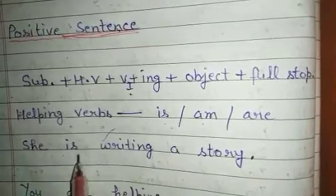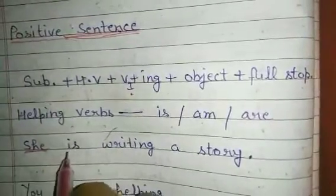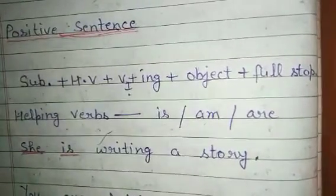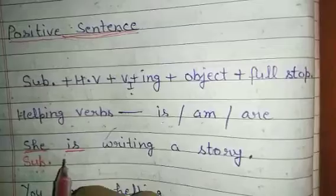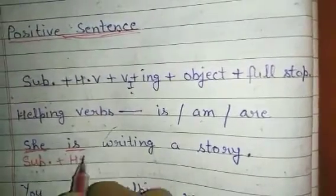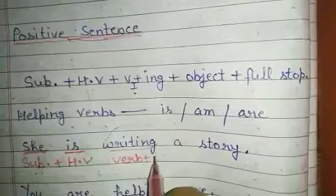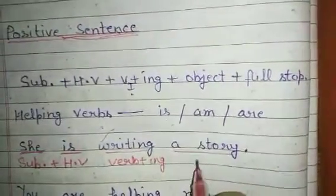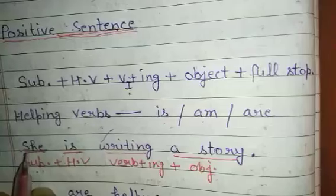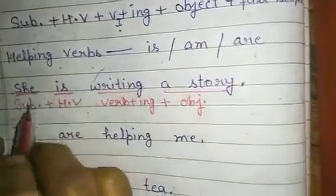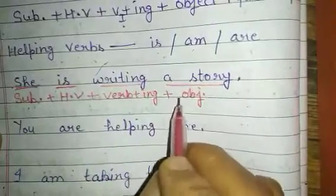For example, with a singular subject: 'She is writing a story.' The helping verb here is 'is.' In this sentence, 'she' is the subject, 'is' is the helping verb, 'writing' is the verb (write plus -ing), and 'a story' is the object. This sentence clearly applies the formula: subject plus helping verb plus verb plus -ing plus object.